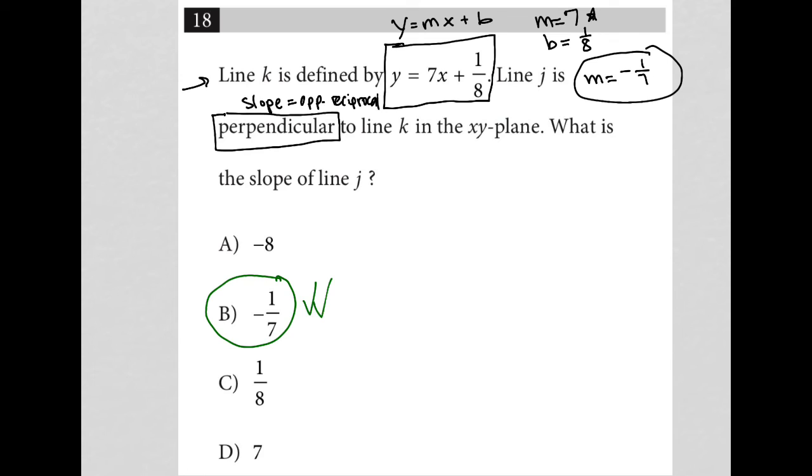Because again, our slope for line K is 7, line J is perpendicular to line K, and therefore our slope for line J is negative 1/7 because the slopes of perpendicular lines are opposite sign reciprocals.